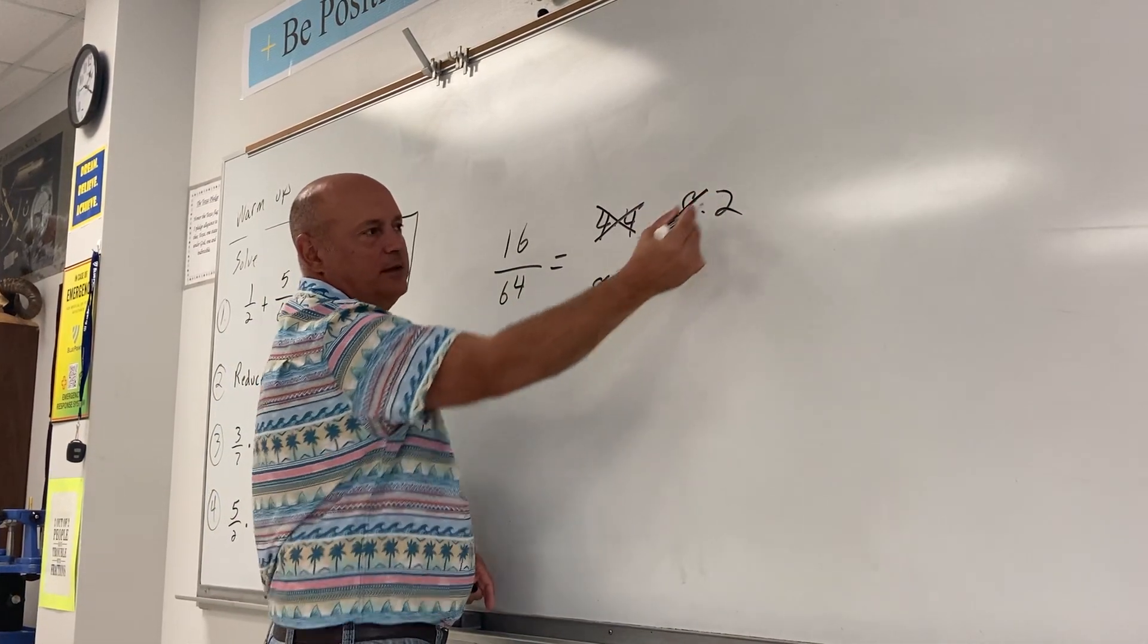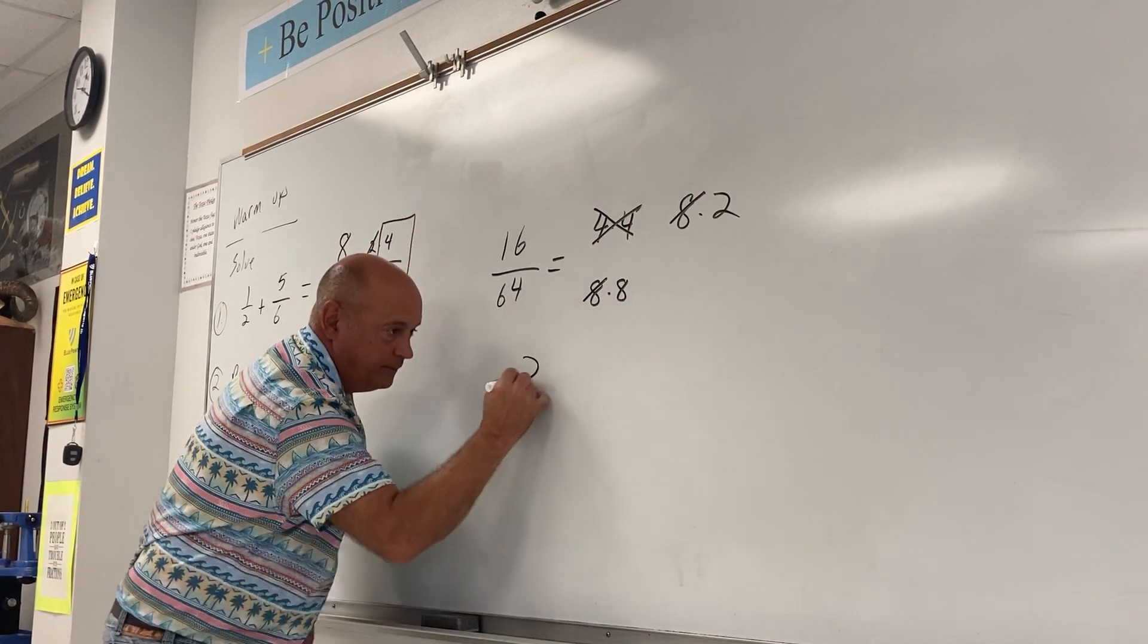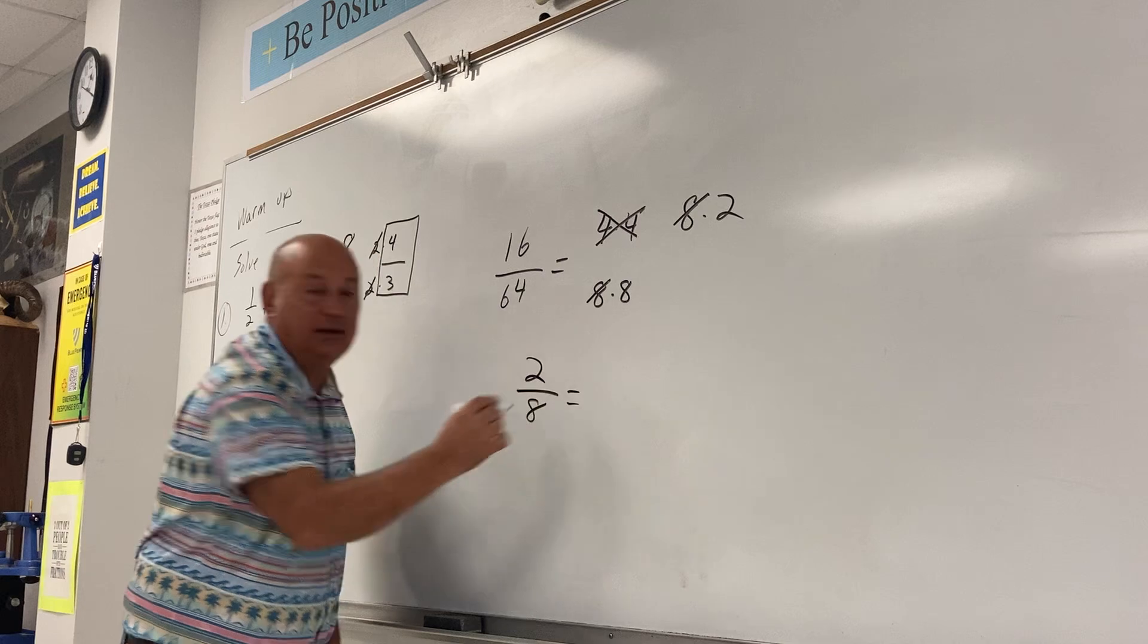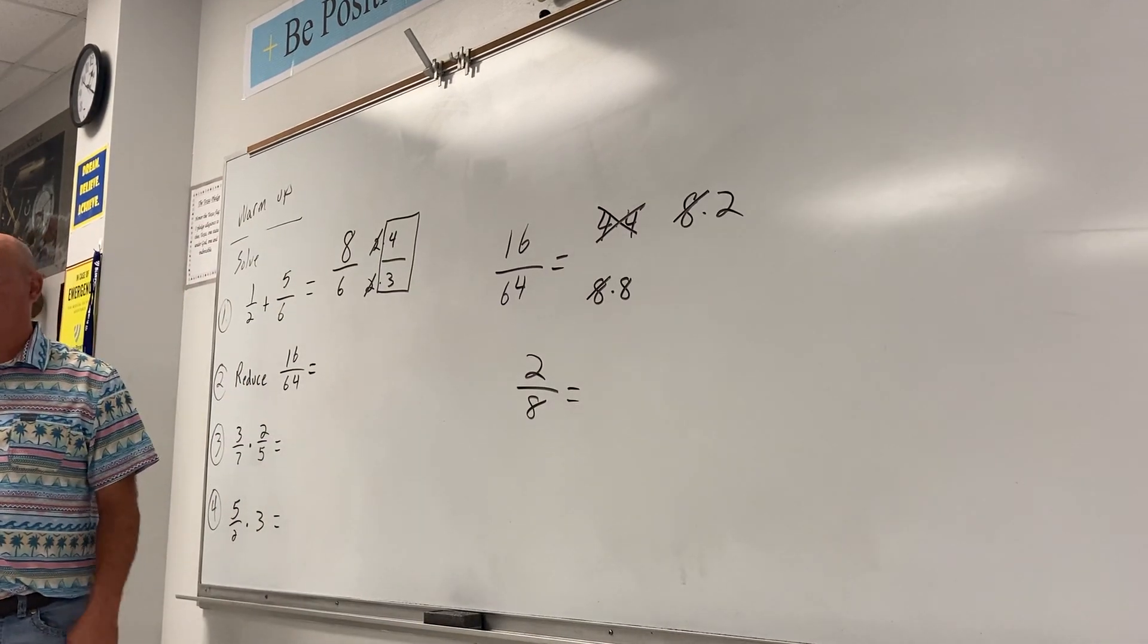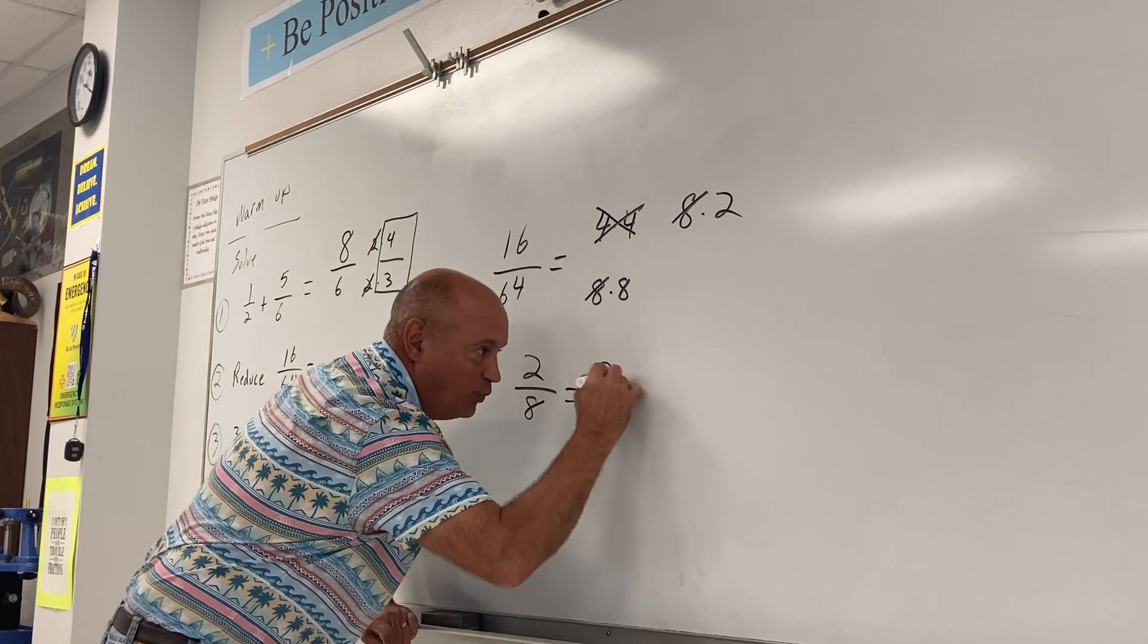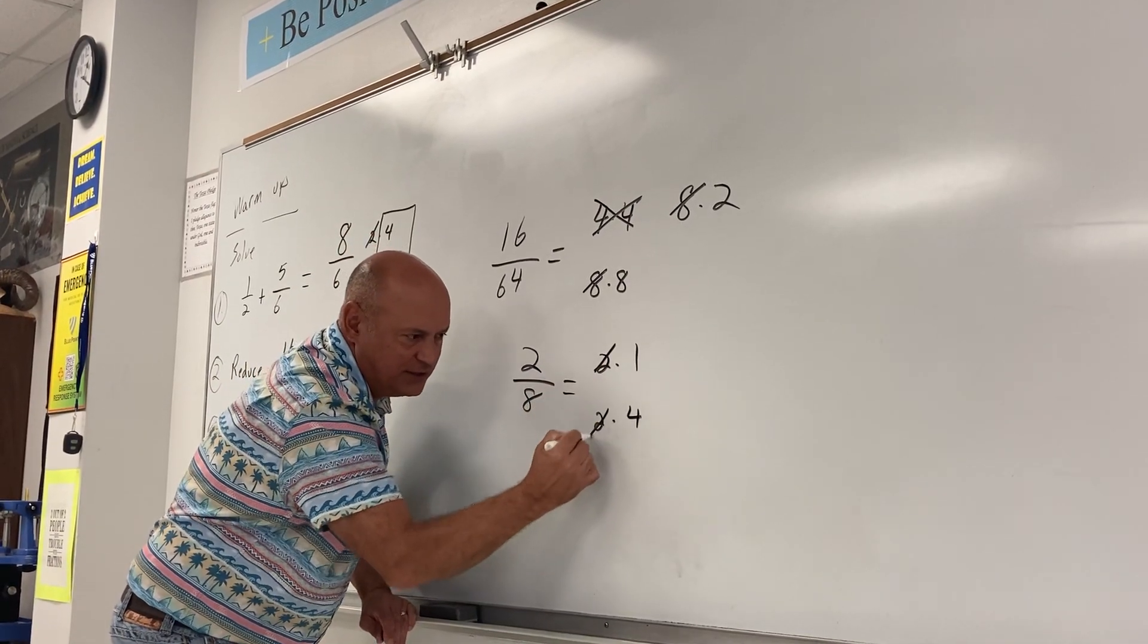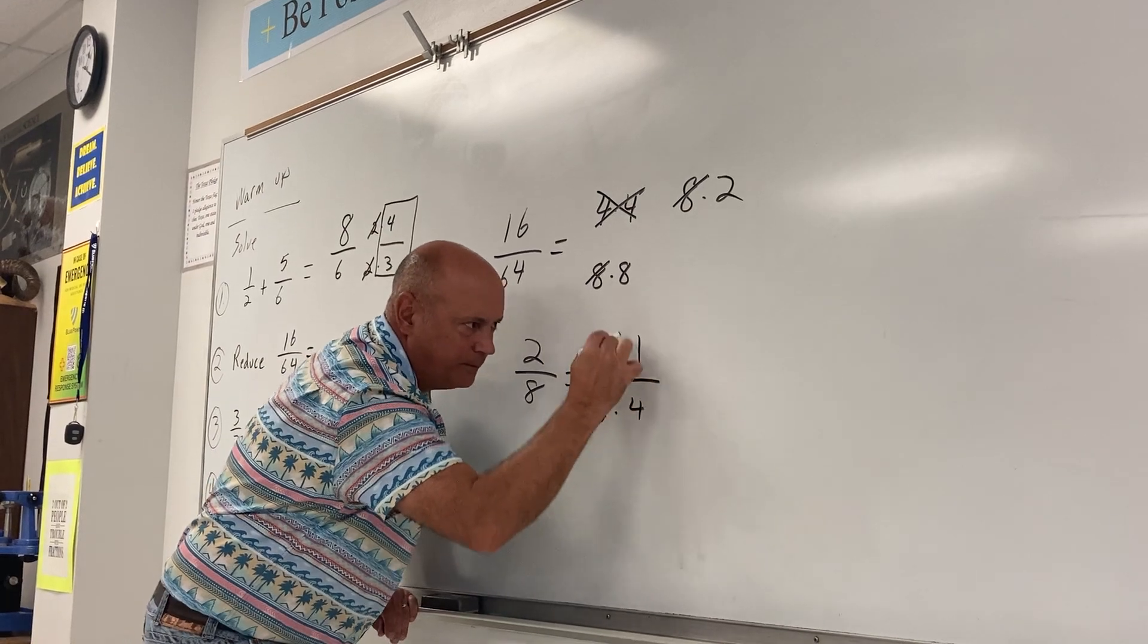What is left? Two on top. Eight on? One on top. Now that can be simplified again. What number goes into two and eight? Two. Two does. Two times one. Two times four. Cancel out the twos because that turns into one. What's my final answer? One fourth.